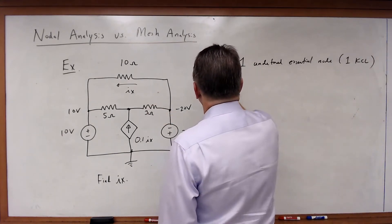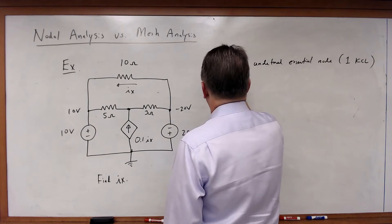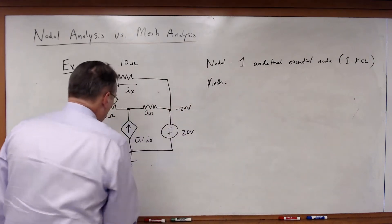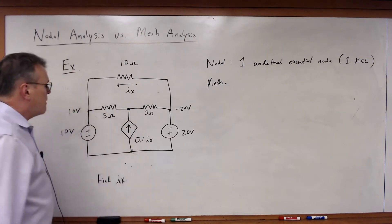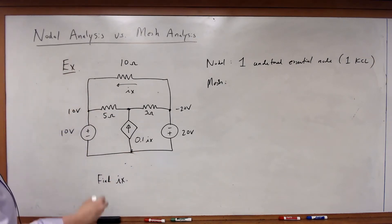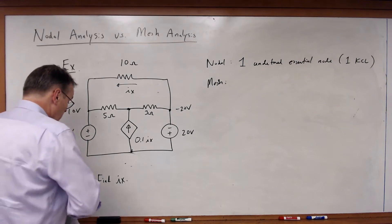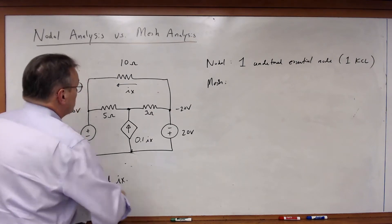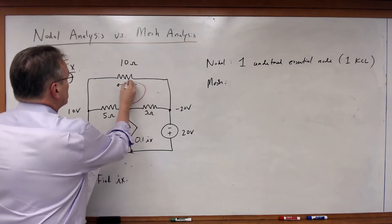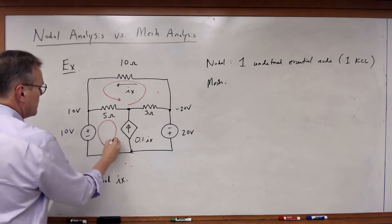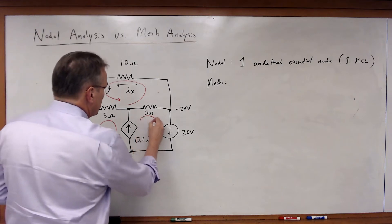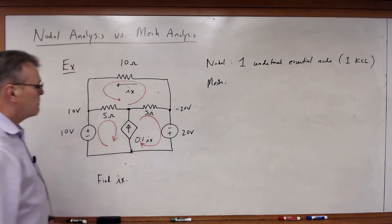Now let's think about this from a mesh point of view. So from a mesh point of view, what do I have here? I've got, in this case, three meshes. So I would need a mesh current here, I would need a mesh current here, I would need a mesh current here. Three meshes.